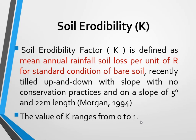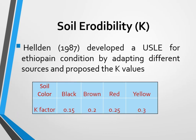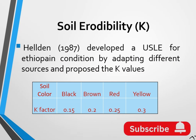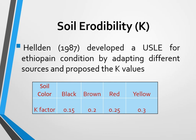The values of the soil erodibility factor K range from zero to one. Held, developed in 1987 for pan conditions by adapting different sources, proposed K values based on soil color. For instance: black soil has a K factor of 0.15, brown is 0.2, red is 0.5, and yellow is 0.3. So if you have a soil type, you should classify the soil color before assigning the K factor.